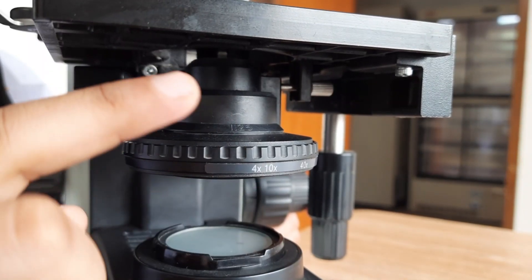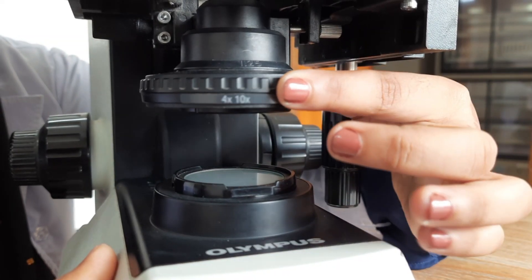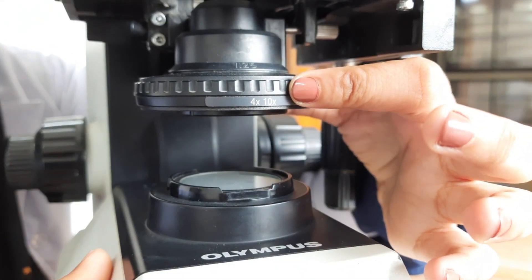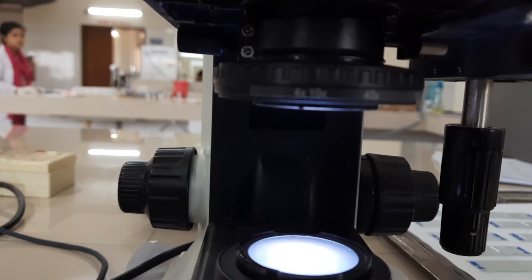The condenser is located beneath the stage and is responsible for the first step of focusing light onto the specimen. It can be adjusted to control the amount and angle of light that reaches the specimen.